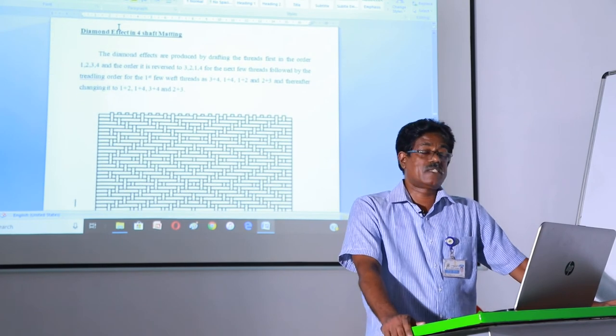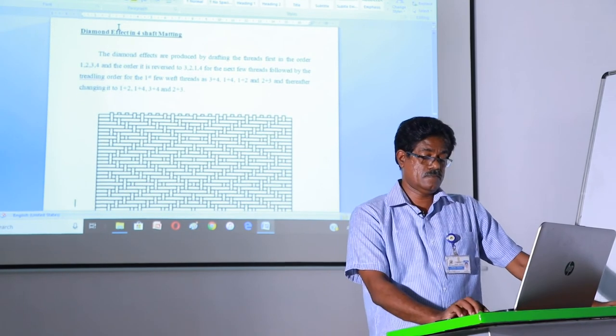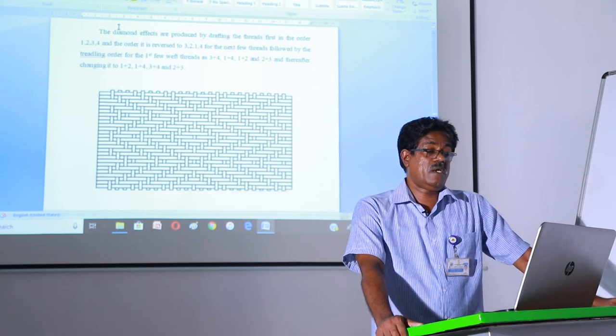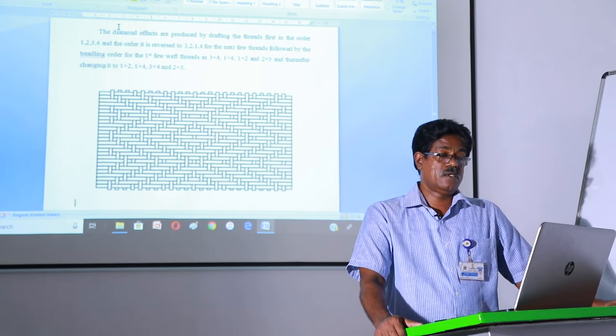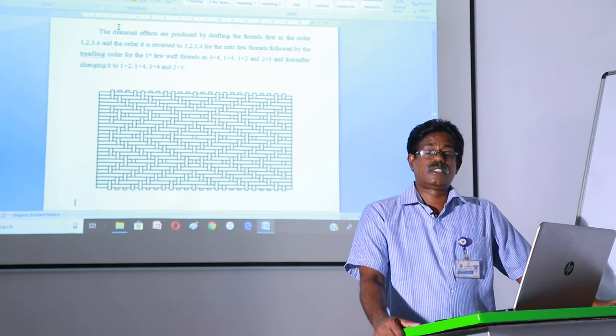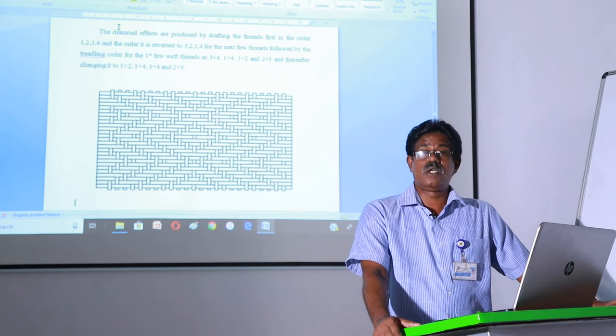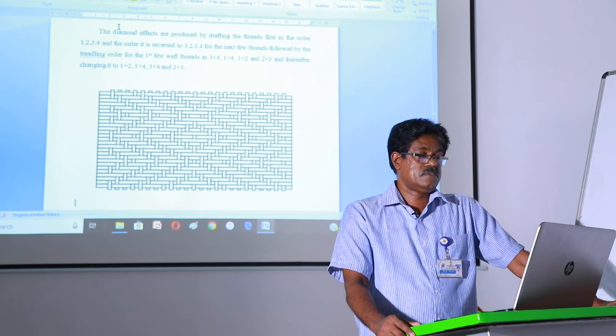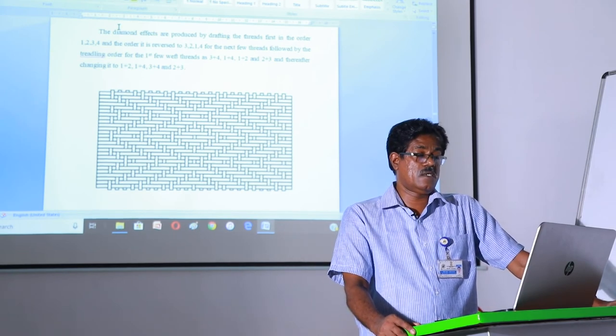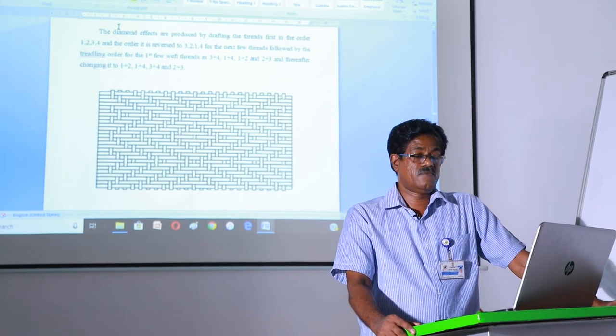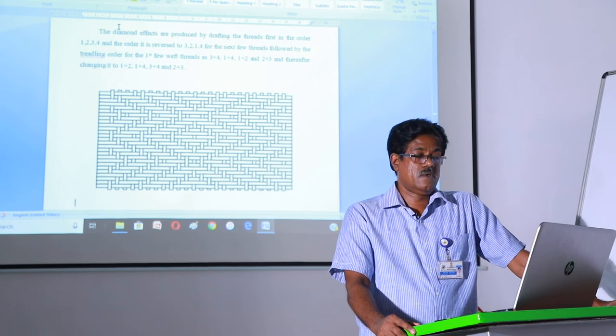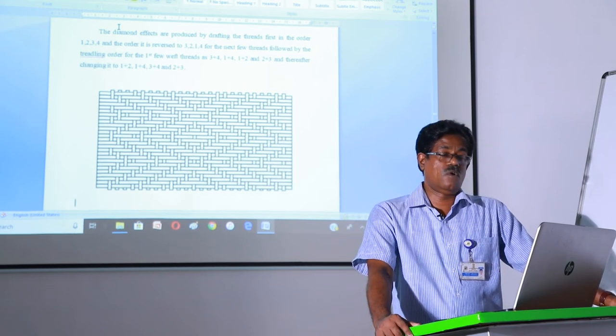Diamond effect in four shaft matting. The diamond effects are produced by drafting the threads first in the order one, two, three, four and the order is reversed to three, two, one, four for the next few threads, followed by the treadling order